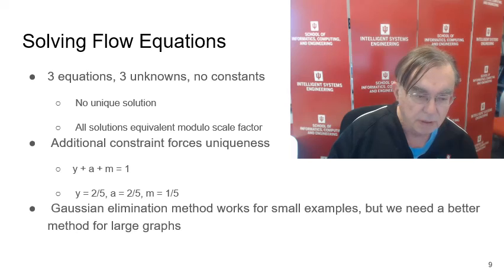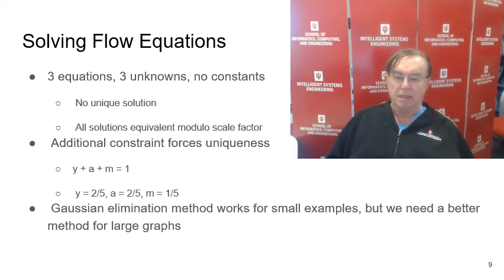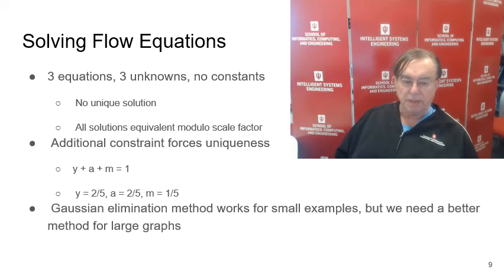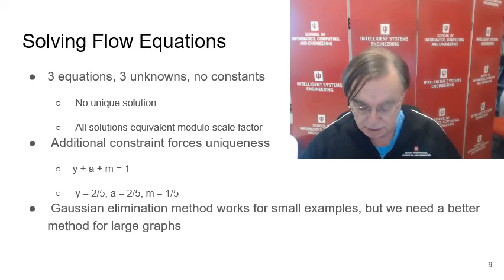These are the mathematical equations. Notice there are three equations and three unknowns. We know that won't give a solution except if we add y plus a plus m equals one. The solution is y of two-fifths, a of two-fifths, and m of one-fifth. Microsoft is probably more important than Yahoo, but never mind, it was just an example. This is a three-by-three set of equations, and you can use the world's simplest matrix inversion code, Gaussian elimination, or standard linear equation solver technology to get this answer.